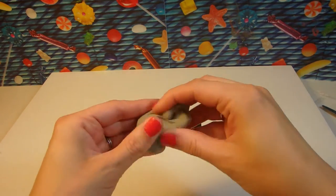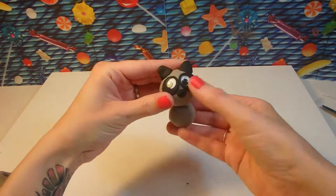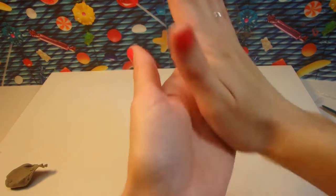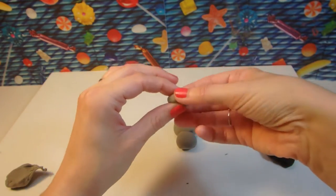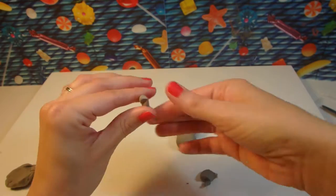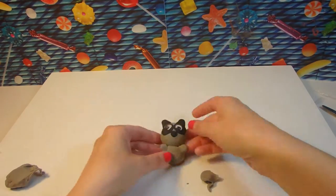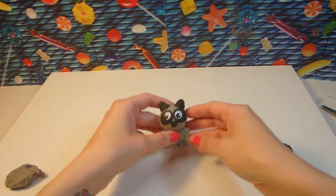Now our raccoon needs a little grey body. We're going to make four arms and legs. Two arms and two legs. There we go.